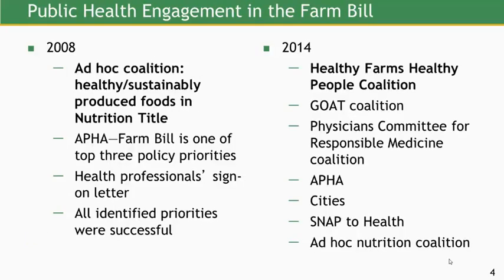That ad hoc coalition focused on a set of priorities related to healthy and sustainably produced foods within the nutrition title—not the full scope of public health in the Farm Bill, but very specific priorities. The American Public Health Association also engaged in 2008, and the Farm Bill was one of their top three policy priorities, which many consider a big achievement. The identified priorities by that ad hoc coalition were all actually successful.